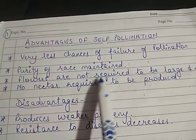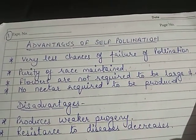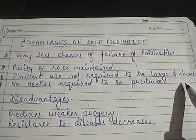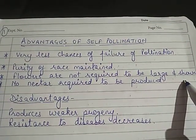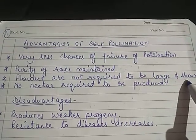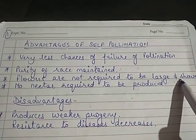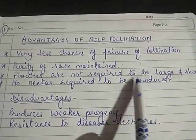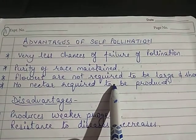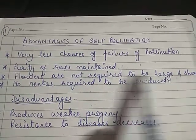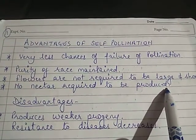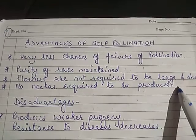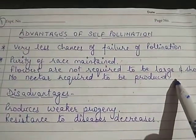In self-pollination, flowers are not required to be large or attractive — they can be small and simple. In fact, no nectar needs to be produced, so the energy of the plant remains minimal. The energy saved from not producing these features allows the plant to use more energy for other processes.